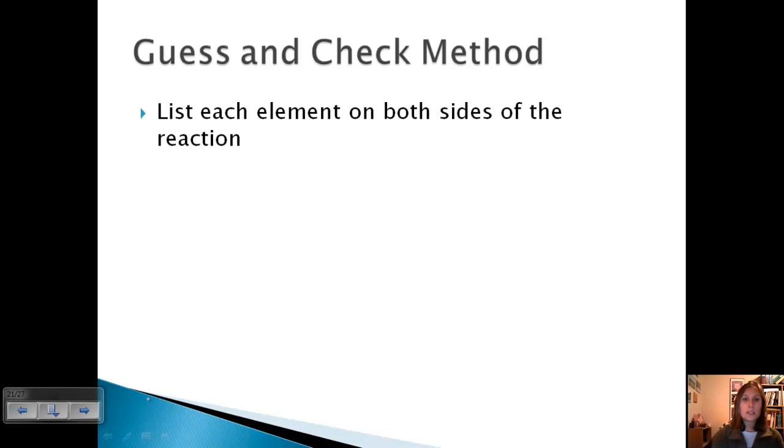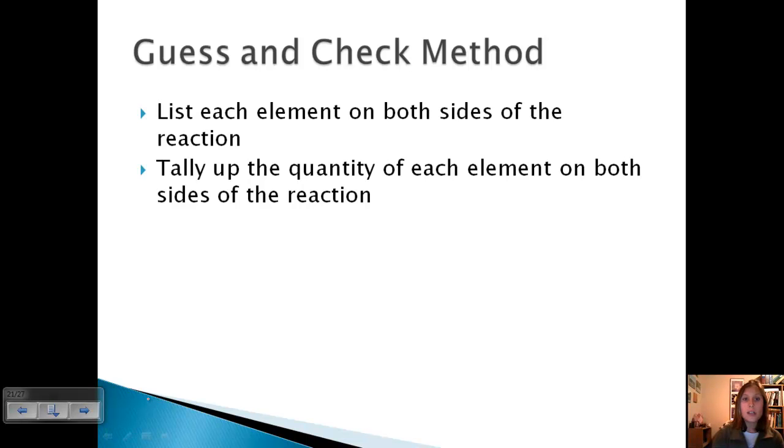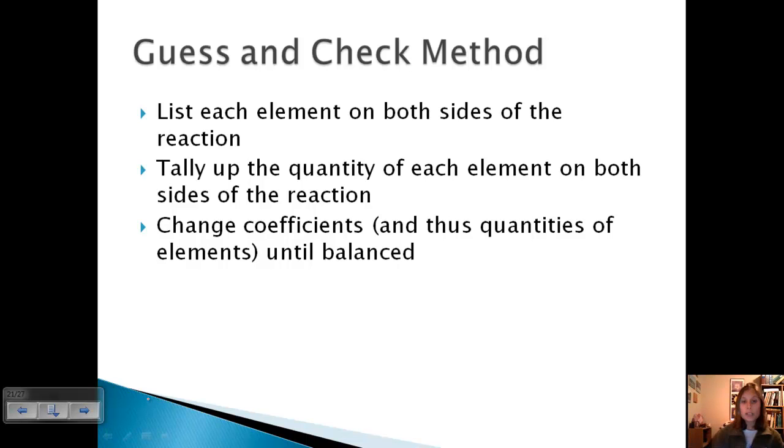Okay, now let's look at the guess and check or the inspection method. Here you're going to list each element on both sides of the reaction, tally up the quantity of each element on both sides, and then go back and forth and change coefficients and thus the quantities of the elements until you get the same number on both sides of the reaction. You can also just inspect, and we'll show an example of that as well.